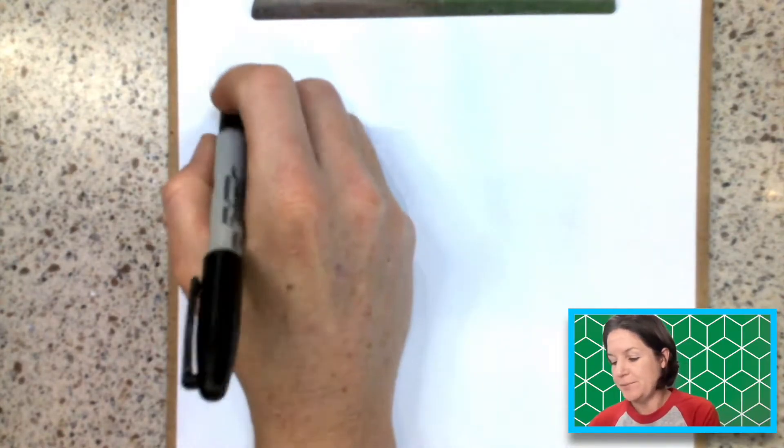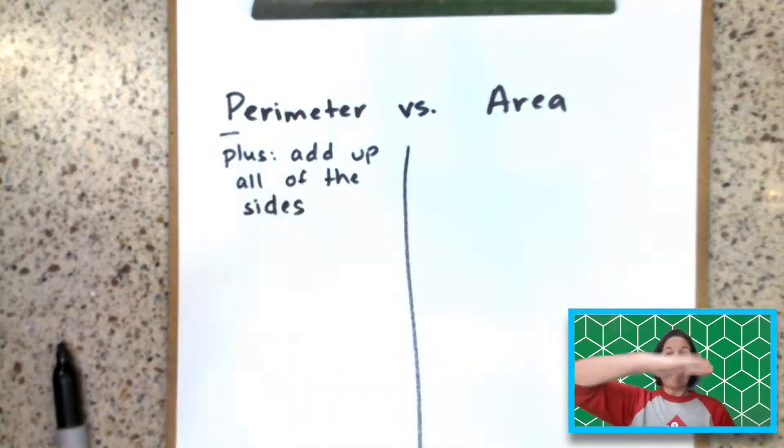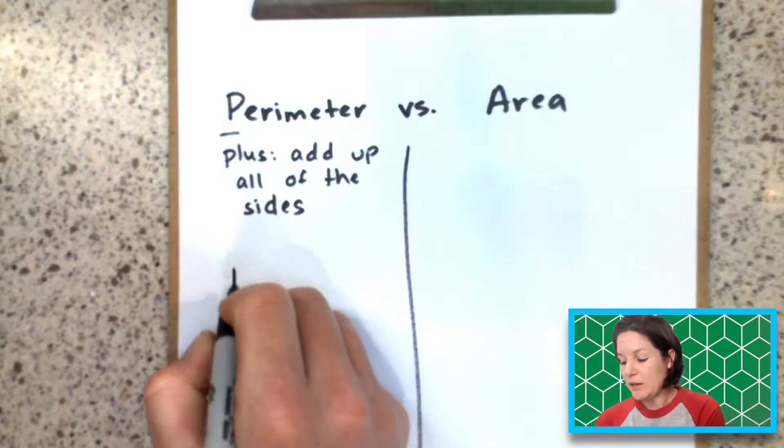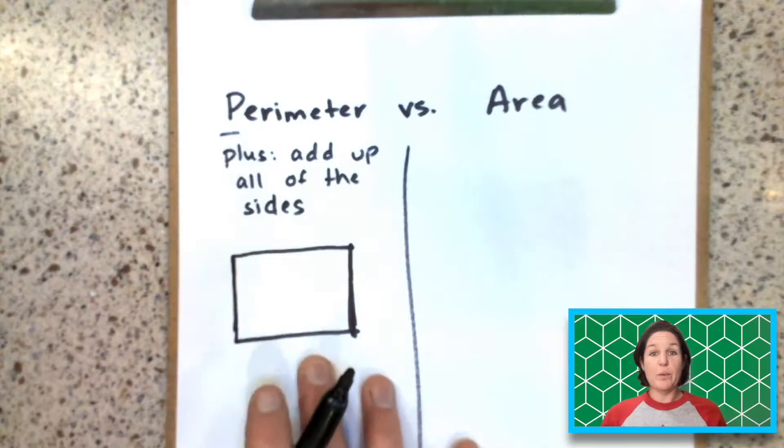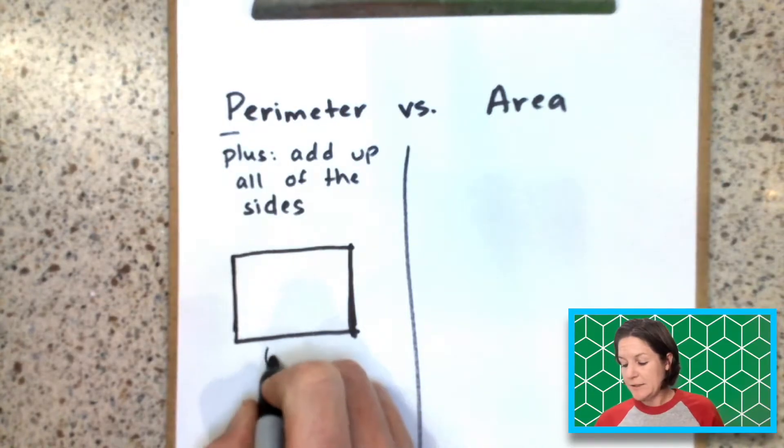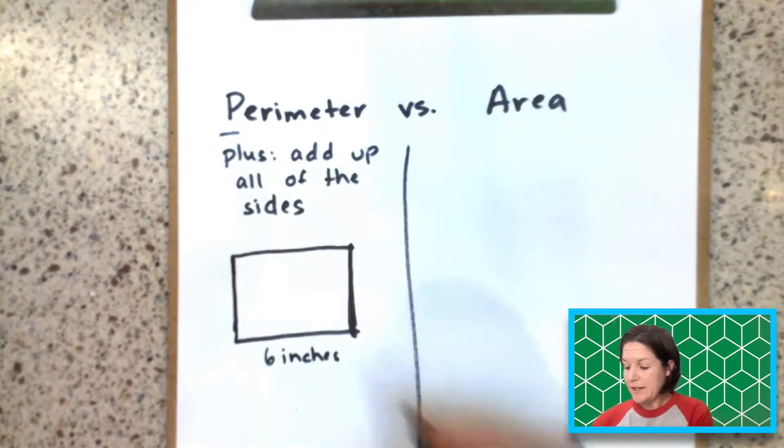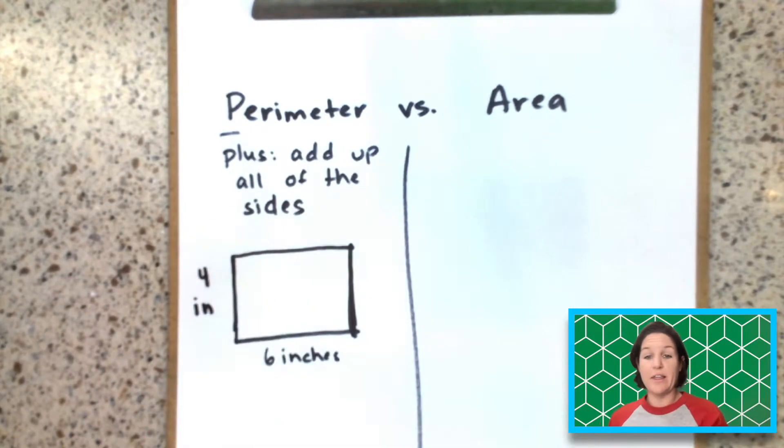So perimeter and area for third grade. Let's break this down. Perimeter, we think of plus add up all the sides. For instance, in third grade, we're usually working with rectangles, right? So if we are finding the perimeter of a rectangle, and if we were given the measurements of let's say six inches on this side, and maybe four inches on this side.